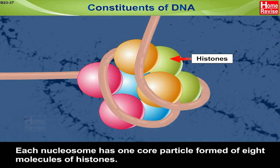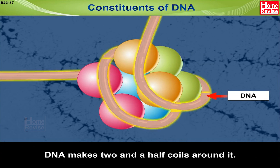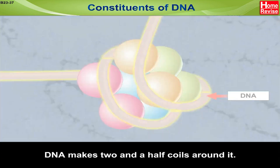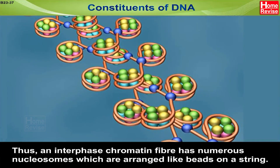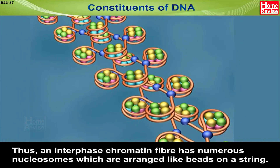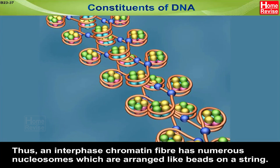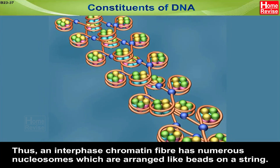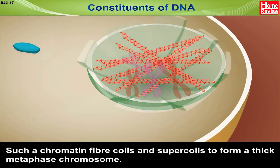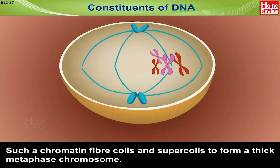Each nucleosome has one core particle formed of 8 molecules of histones, and DNA makes 2.5 coils around it. An interphase chromatin fibre has numerous nucleosomes arranged like beads on a string, as shown in the figure. Such a chromatin fibre coils and supercoils to form a thick metaphase chromosome.